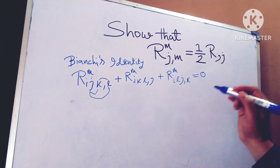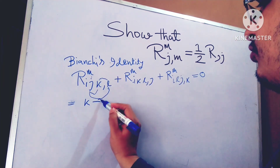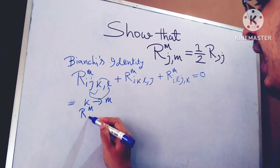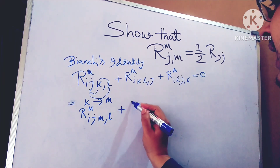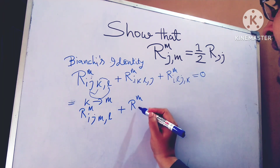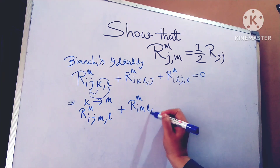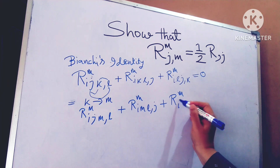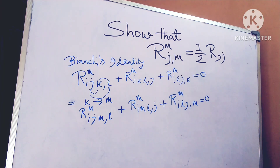I hope it is clear for everyone. Now, let K tend to M — we contract on the index K by setting K equal to M. So I get R_MIJML plus R_MIMLJ plus R_MIJ comma M.